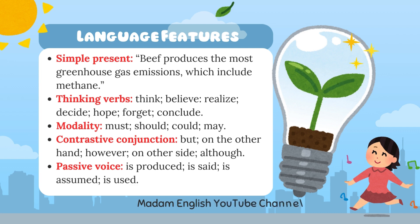These are the language features of discussion text. First, we use simple present tense. For example: 'Beef produces the most greenhouse gas emissions, which include methane.' Then, we use thinking verbs such as: think, believe, realize, decide, hope, forget, and conclude.